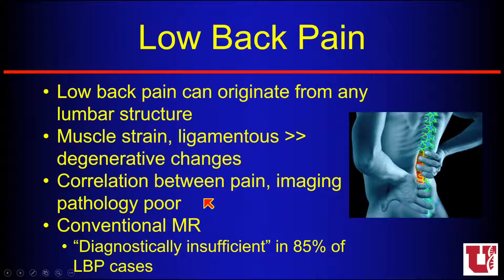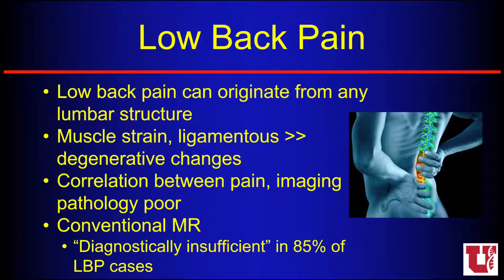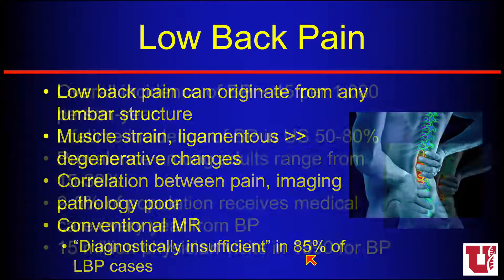Because of that, we know the correlation between pain and imaging is poor. There is not a good correlation between a patient's low back pain symptoms, where they're arising from, and what we see on cross-sectional imaging. So we want to be very careful about the words we use and how we describe these findings, because that correlates very importantly with their therapy. Conventional MRI, which we most commonly use for low back pain after plain film, is diagnostically insufficient in about 85% of low back pain cases.